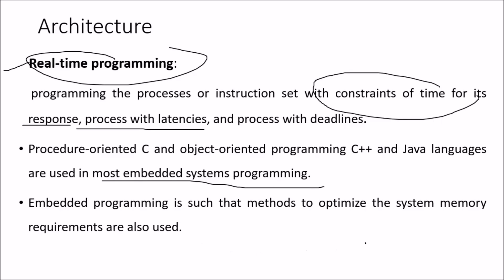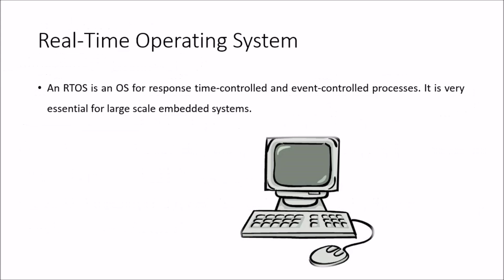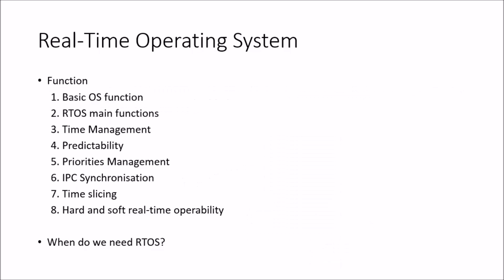Embedded programming also employs methods to optimize system memory requirements. An RTOS is an operating system for response time control and process management, and it is very essential for large-scale embedded systems. The main functions of an RTOS include basic OS functions, time management, predictability, priority management, IPC (interprocess synchronization and communication), time-slicing, and hard and soft real-time operability.